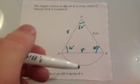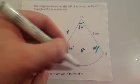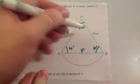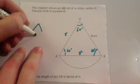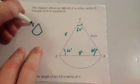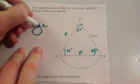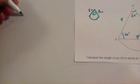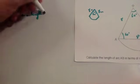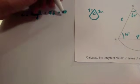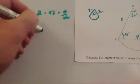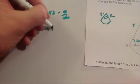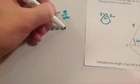Calculate the length of arc AB in terms of pi. You've got a sector with two radii of 8 centimetres and your angle at the top is 60 degrees. The arc length equals pi times diameter times theta divided by 360. This is a non-calculator question, so pi times the diameter - the diameter of this circle would be 16 - so 16 pi, times theta which is 60 degrees over 360.